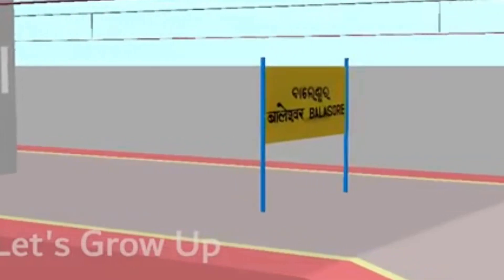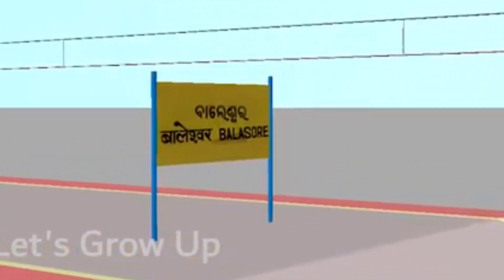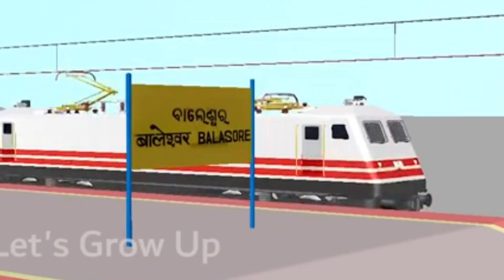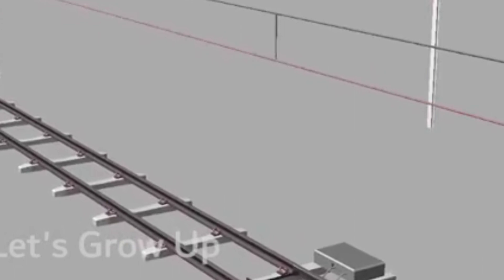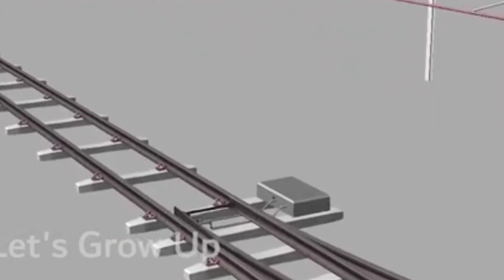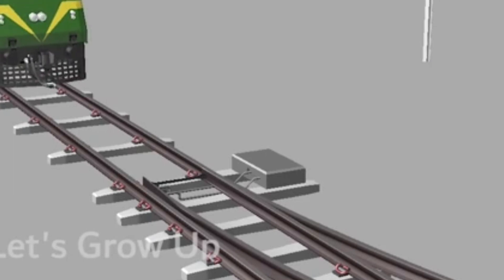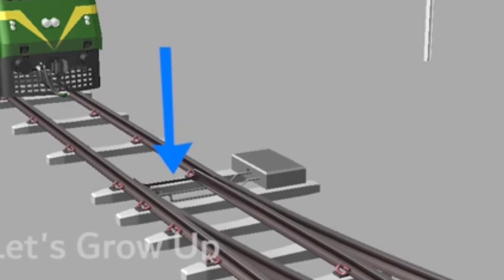Here the Coromandel Express has arrived at Balasor Railway Station. The Wag9 with wagons is waiting for the loop line signal. Now the loop line is activated.